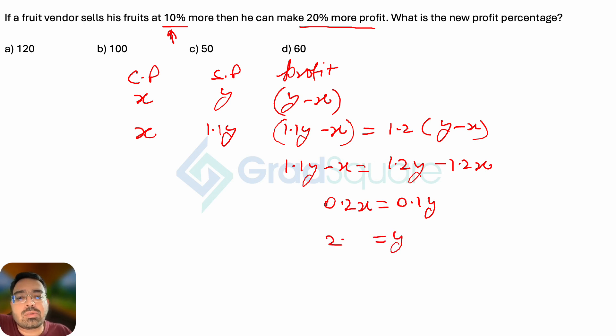So my value of y turns out to be 2x. If y equals 2x, then let's look at the new cost price and the new selling price. The new cost price remains the same, which is x. What will be the new selling price? New selling price y is 2 times x.